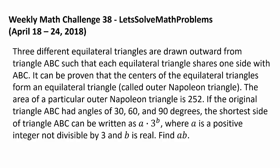The area of a particular outer Napoleon triangle is 252. If the original triangle ABC had angles of 30, 60, and 90 degrees, the shortest side of triangle ABC can be written as A times 3 to the B power, where A is a positive integer not divisible by 3, and B is real. Find A times B.